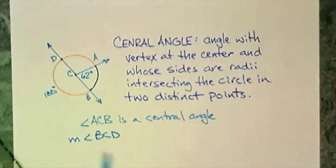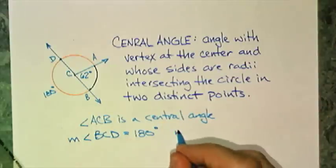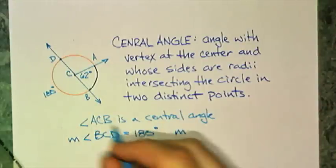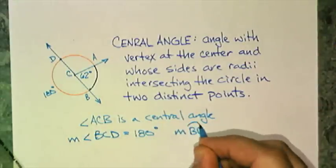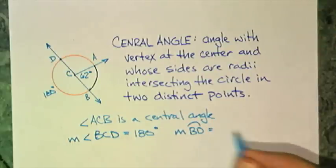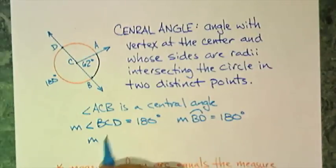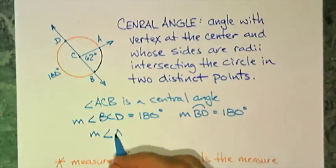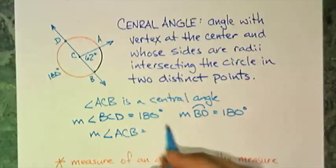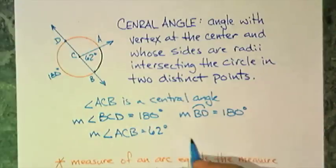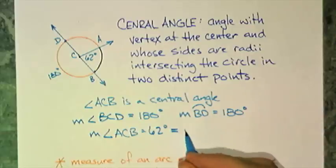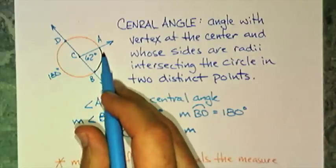Right? And so that's a straight angle, angle BCD. It is also a central angle. The measure of angle BCD is 180 degrees. Also, the measure of arc BCD is 180 degrees. The measure of angle ACB is equal to 62 degrees, which equals the measure of arc AB.